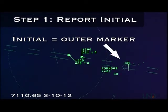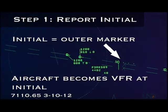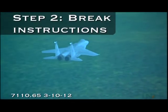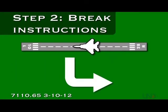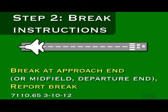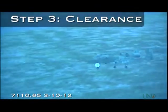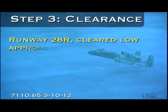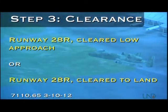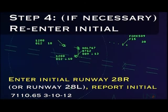This is a VFR maneuver. Once the aircraft reaches the initial point, its IFR flight plan is automatically canceled and you can treat it as a VFR aircraft from that point on. Once the pilot reports initial, your next step is to provide instructions on where to break. Aircraft will normally break over the approach end of the runway, but you can have them break at midfield or the departure end depending on your traffic situation — by saying 'break at approach end, report break.' Step 3 is the clearance: once the pilot reports the break, clear them for landing using standard phraseology. If the aircraft is doing a low approach, your last step is to instruct the pilot to enter initial and report initial again.